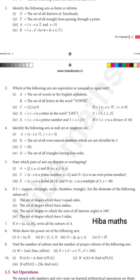Exercise 1.2: From the 7th to the 10th question, these are the main questions. You can be asked cardinal number questions for 2 marks or 1 mark. Topics include the null set, singleton set, and disjoint set. Overlapping or disjoint sets — questions 7 to 10 are very important.